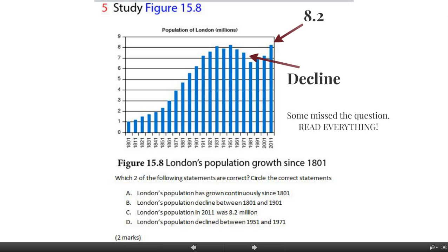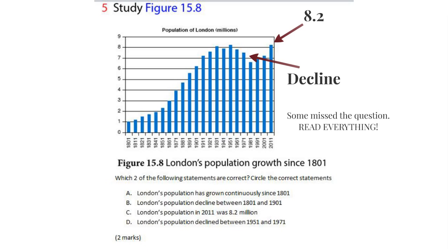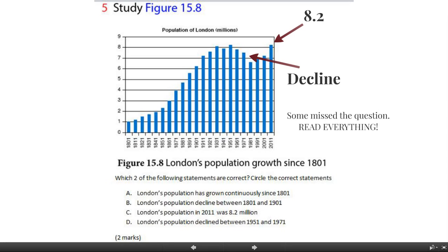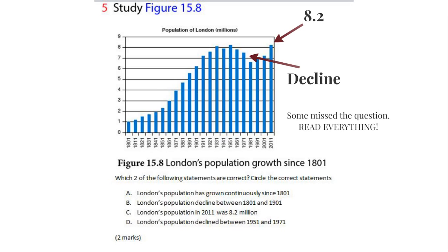This is a bar graph which shows London's population growth since 1801. You've got four statements — two of those statements are true and two are not true. The correct answers are that London's population was 8.2 million in 2011, which you can see at the top of the graph, and the second true statement was that London's population declined between 1951 and 1971, which you can see as a steep decline on the graph. That's quite an easy question as long as you read it properly — two easy points in the bag.